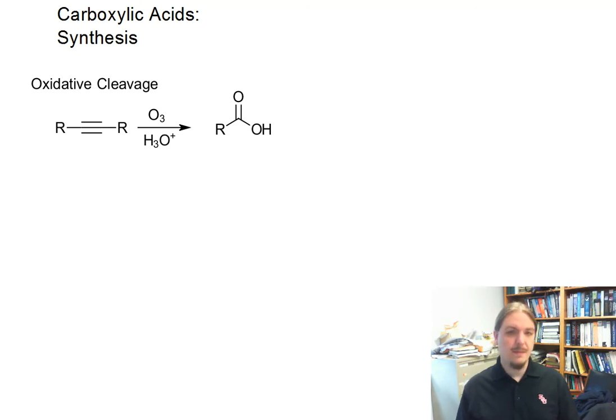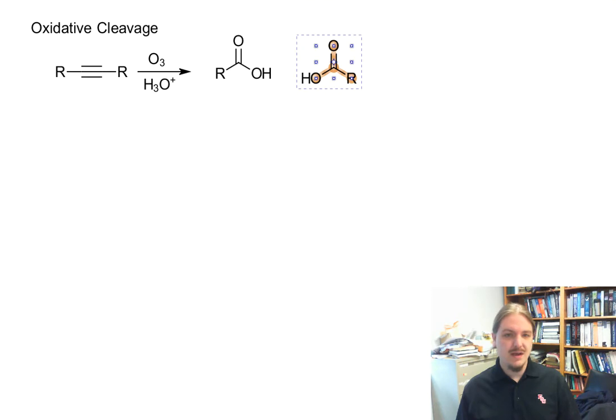But basically, if the alkyne is symmetric, you get the same carboxylic acid. If it's not symmetric, you get different carboxylic acids. If it's terminal, the terminal one gets chewed off to carbon dioxide. So here's one way to make carboxylic acids.